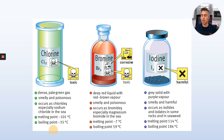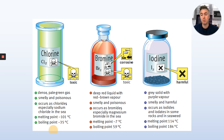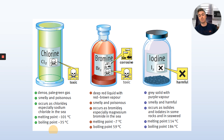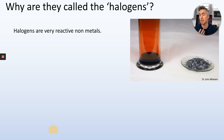Now we're on to the halogens. All of these are generally unpleasant. Chlorine is a pale green gas — smelly and poisonous — and appears as chlorides, especially sodium chloride in the sea; it melts at -101°C and boils at -35°C. Bromine is a deep red liquid with a brown-red vapour, also smelly and poisonous, occurring as bromides like magnesium bromide in the sea; it melts at -7°C and boils at 59°C. Iodine is a grey solid with a purple vapour, smelly and harmful, occurring as iodides in rocks and seaweed; it melts at 114°C and boils at 184°C. They're all reactive, non-metals on the other side of the periodic table, and they're all toxic or harmful.